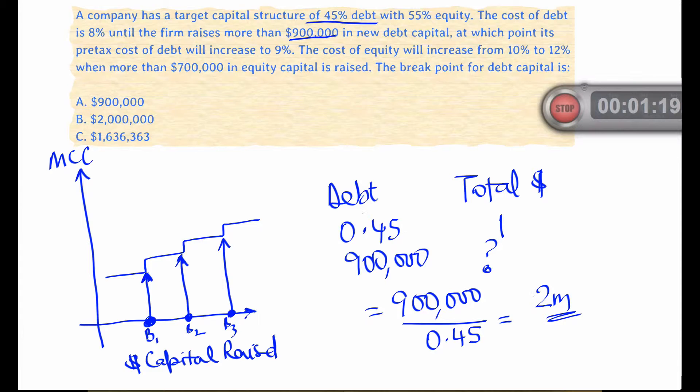Now notice that there was a whole bunch of extraneous information provided. So the actual cost of debt does not matter when you're computing the break point. All that matters is the relative amount of debt given by the target capital structure and the total amount of money that's being raised.